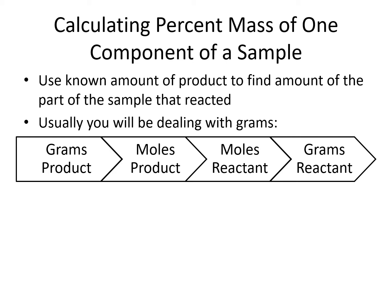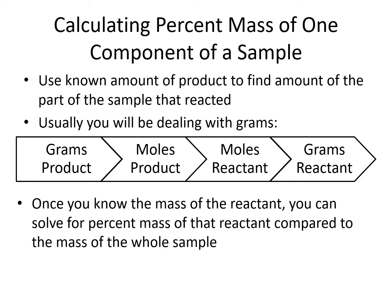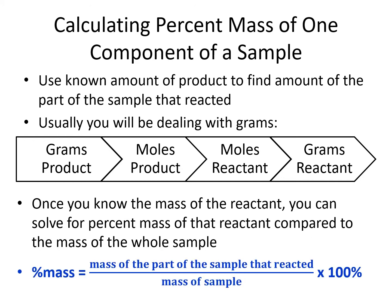Once we know the mass of the reactant, we can divide it by the mass of the sample that the reaction is a part of, and multiply by 100 to get percent mass.